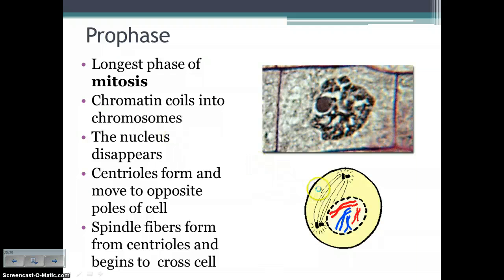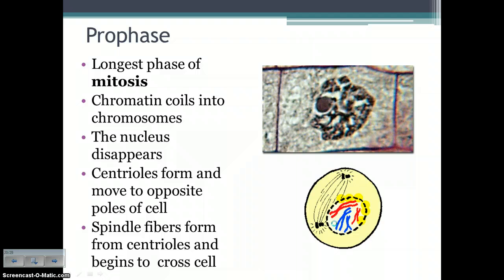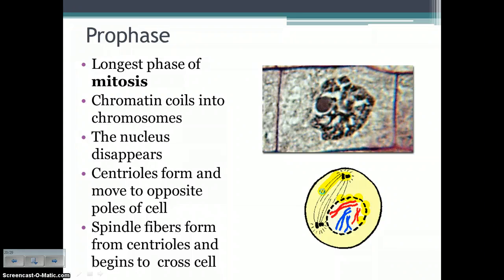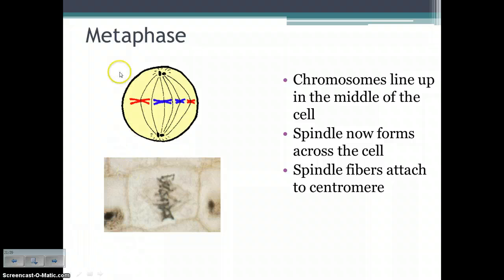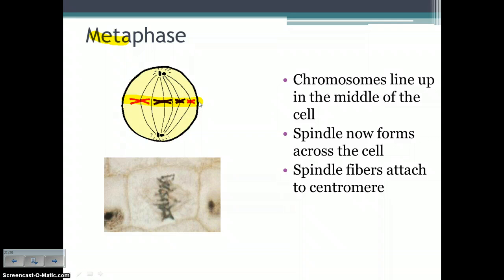In prophase, you also have the formation of structures called centrioles, which produce spindle fibers that become very important in the next phases. So in prophase, the cell is preparing for division by breaking down the nuclear membrane and forming chromosomes. Metaphase is easy to remember because 'meta' sounds like 'middle' — this is the phase where chromosomes line up along the middle of the cell, pushed there by the spindle fibers that attach to the centromeres.